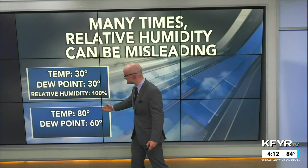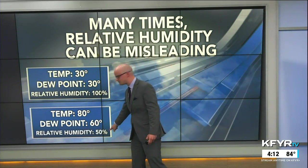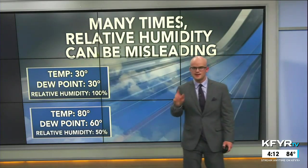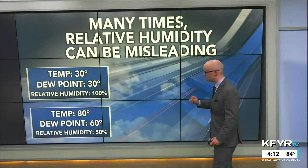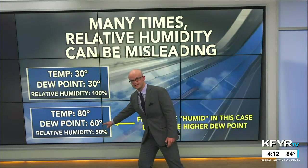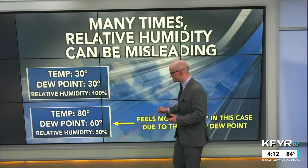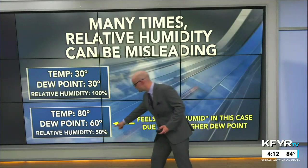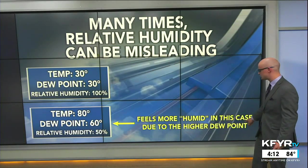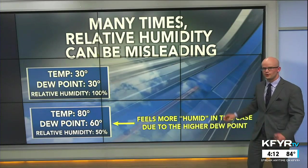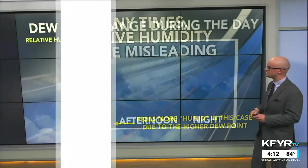With a temperature of 80 degrees and a dew point of 60 degrees, relative humidity is only 50 percent. But based on that dew point scale, you would say this dew point is very humid — you'd feel a lot of humidity in the atmosphere. The relative humidity is only 50 percent, yet it feels more humid in this case due to that high dew point, not because of a high relative humidity percentage.